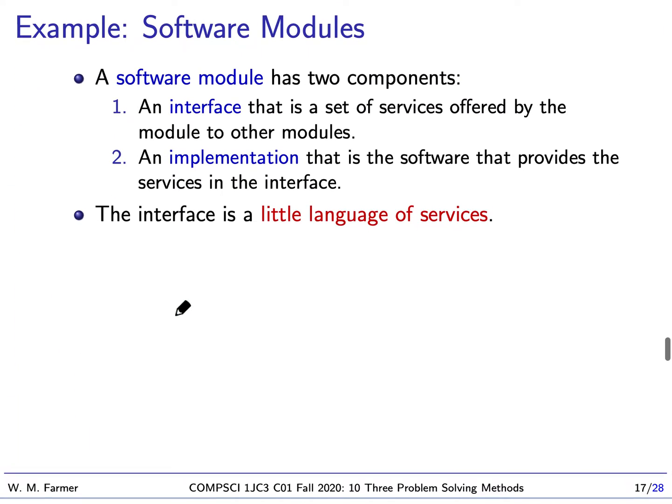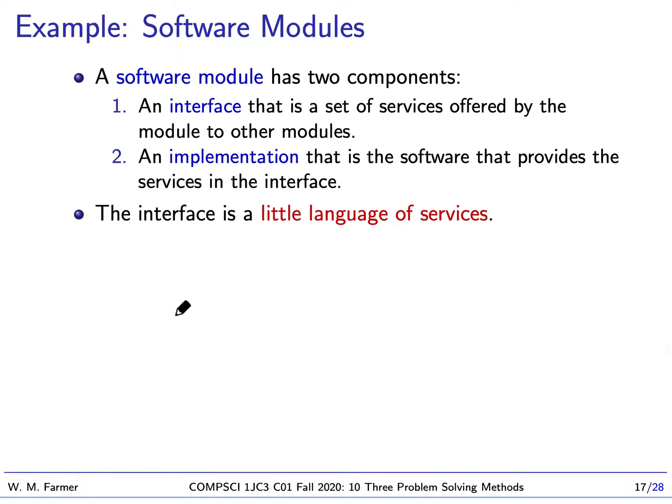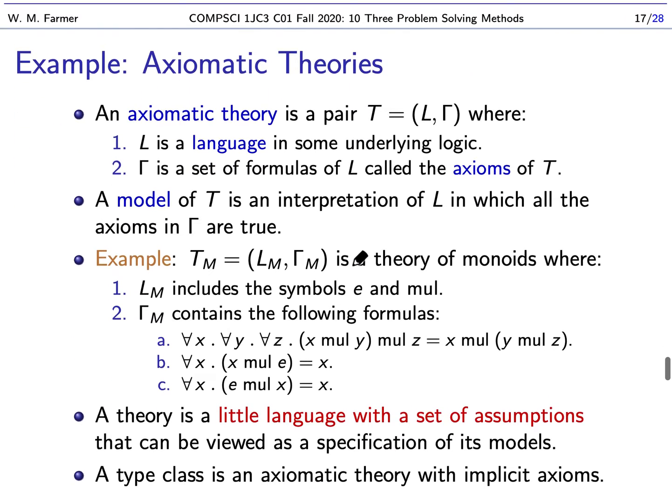Let's go to another example of a little language. A software module has two components: an interface, that's a set of services offered by the module to other modules, and an implementation, that's the software that provides the services in the interface. The interface is a little language of services. You can use these services, put them together various ways, and solve various problems. This is a very important example of a little language that's used everywhere in software development.